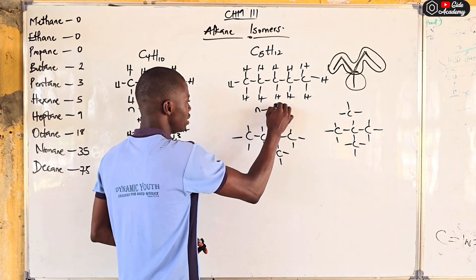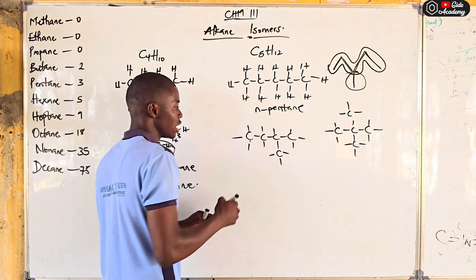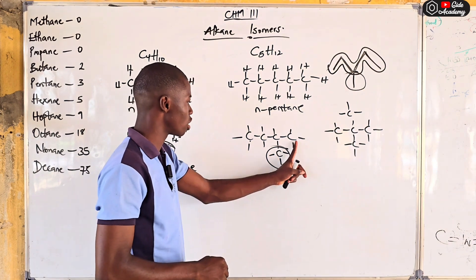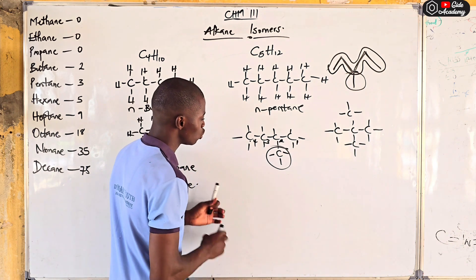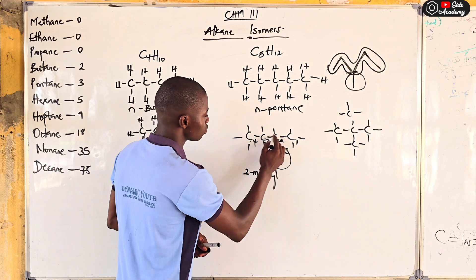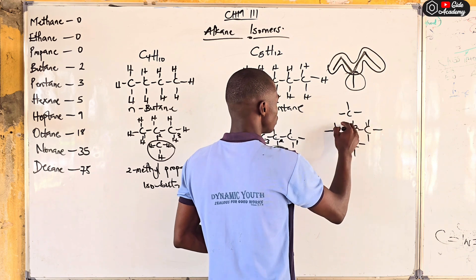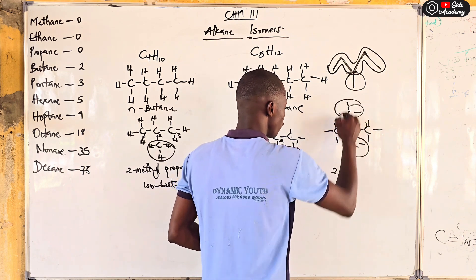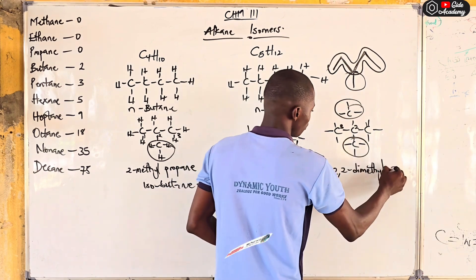For naming: the straight five-carbon chain is pentane. For the branched version, count from the side closer to the branch — so the main chain has four carbons (butane) with a methyl group at position two: 2-methylbutane. The third isomer has methyl groups at positions two and two on a three-carbon chain: 2,2-dimethylpropane.